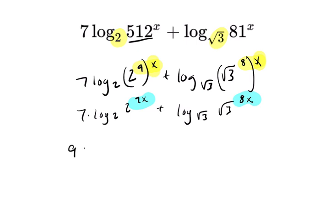And you get 9x—this is a 9—times the 7 times log base 2 of 2 plus 8x times the log base square root of 3 of the square root of 3.